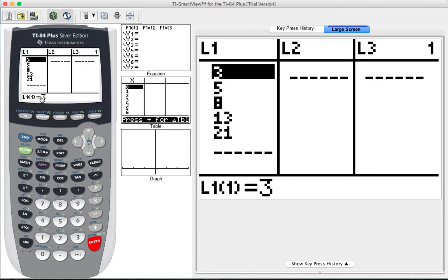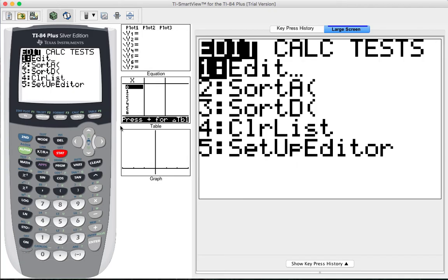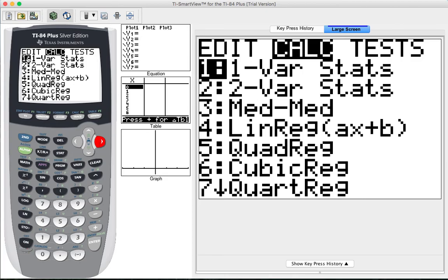The next step is to find the sample standard deviation and the population standard deviation. To do that, we're going to use the calculator function one-var stats. One-var stats is found by pressing STAT, going over to the calc menu, and number one, one-var stats. It stands for one-variable statistics.